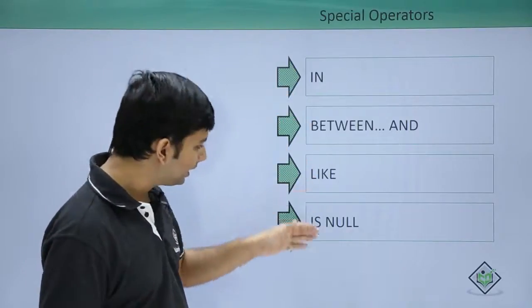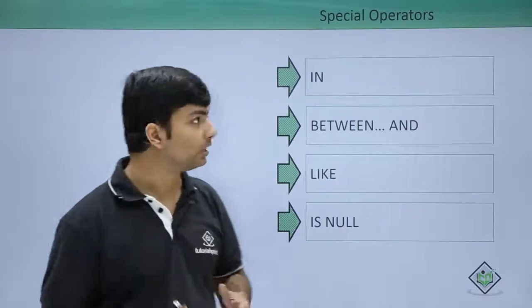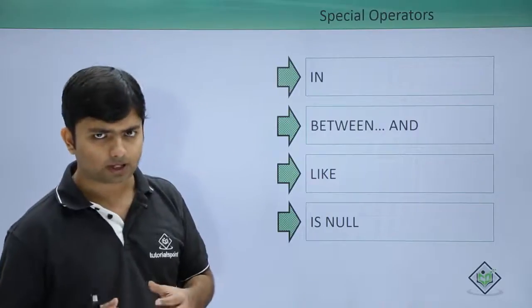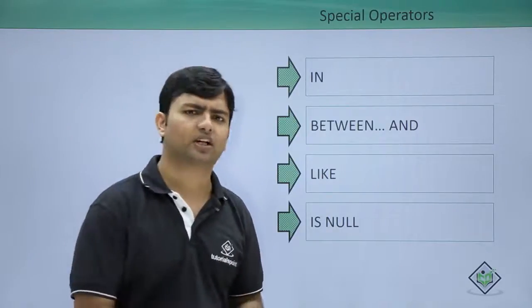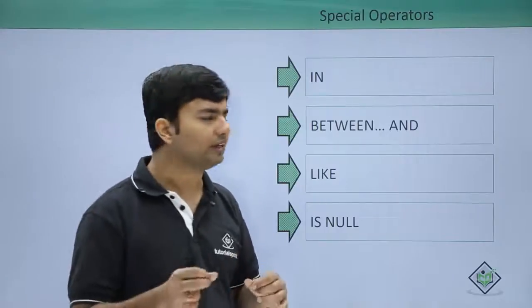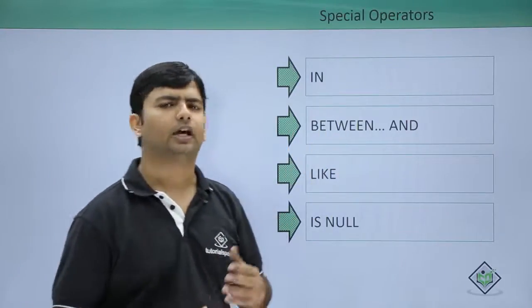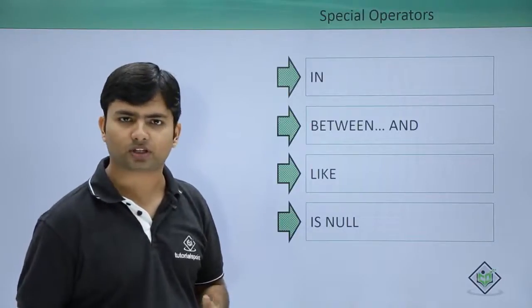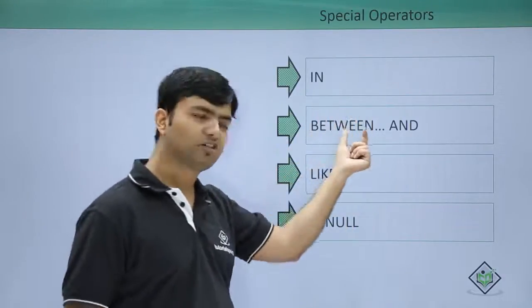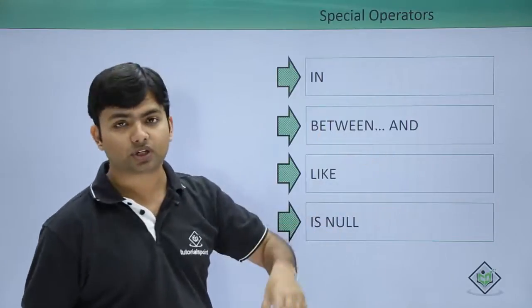Now we have some more special operators in SQL: IN, BETWEEN AND, LIKE, and ISNULL. When we want to compare multiple values for equality, we use the IN operator, since the equals operator can only compare a single value at a time. For example, to get employees with IDs 101, 103, and 105, the IN operator handles this easily. If you need to compare a range, use the BETWEEN AND operator — for numerical or date-time ranges — where you pass the smaller value first and then the upper limit, and both values are included in the condition.